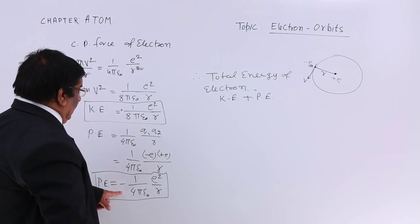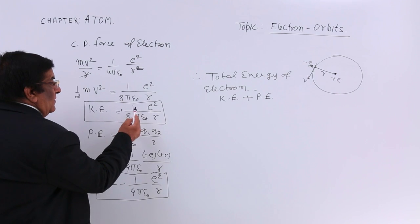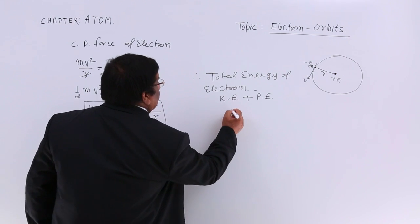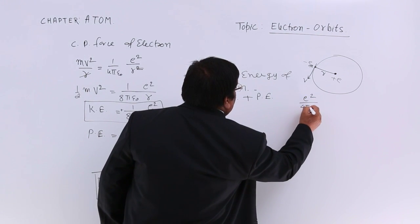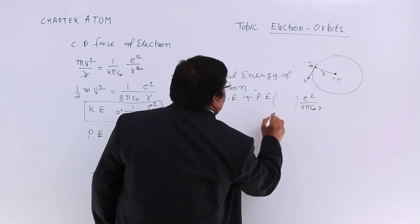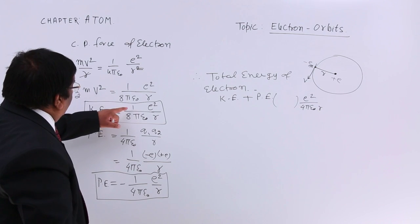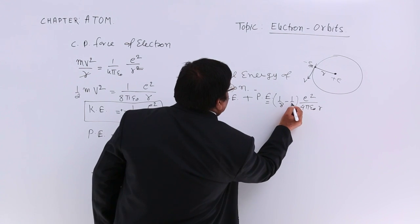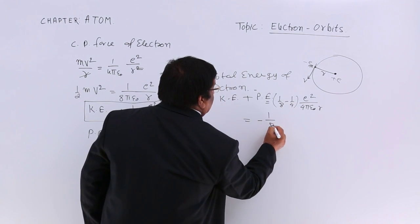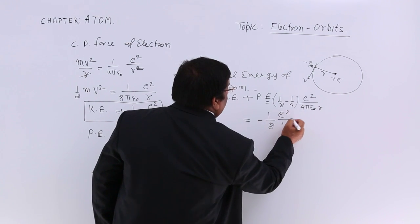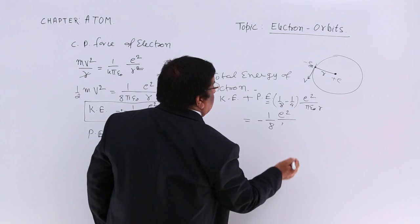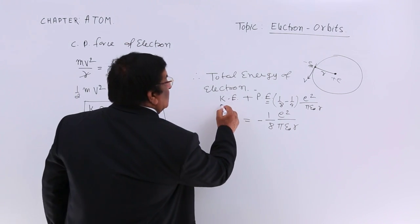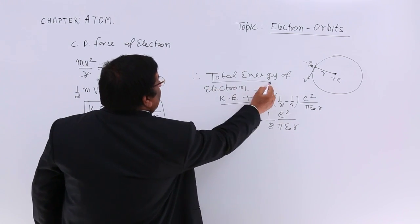Adding KE and PE, we get E²/(πε₀r) multiplied by the bracket (1/8 minus 1/4), which equals minus 1/8. So total energy equals minus(1/8πε₀)(E²/r). This is KE plus PE, that is, the total energy.